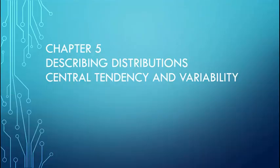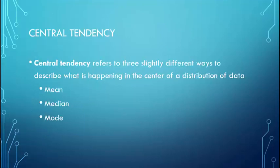Hello everybody, welcome to Chapter 5, which is Describing Distributions: Central Tendency and Variability. This lecture is going to give you the background information, much of what you probably learned in your statistics lecture class. We certainly need to go through it and be sure you are comfortable with it before we move into how to find these values in SPSS. We'll start with Central Tendency, which refers to three different ways to describe what's happening in the center of a distribution.